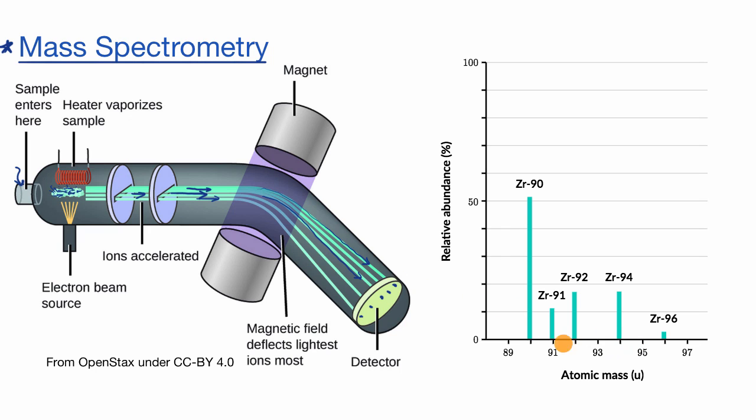And then from that, you can generate a chart that looks like this, where you see on the horizontal axis, sometimes you'll see it labeled atomic mass, and here it's in unified atomic mass units. And you can see when you put the zirconium through the mass spectrometer like this, you get a little bit that has a mass number of 96.